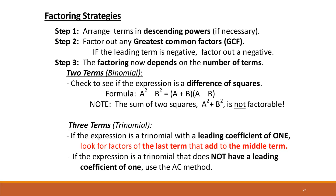We have several factoring strategies. First, we're going to arrange the terms in descending powers if that's not already done. Second, we'll factor out any greatest common factors. Third, we factor based on the type of problem: if it's a two-term binomial, we use the difference of squares formula; if it's a three-term trinomial, we use the leading coefficient, last term, and middle term — we may use the AC method.